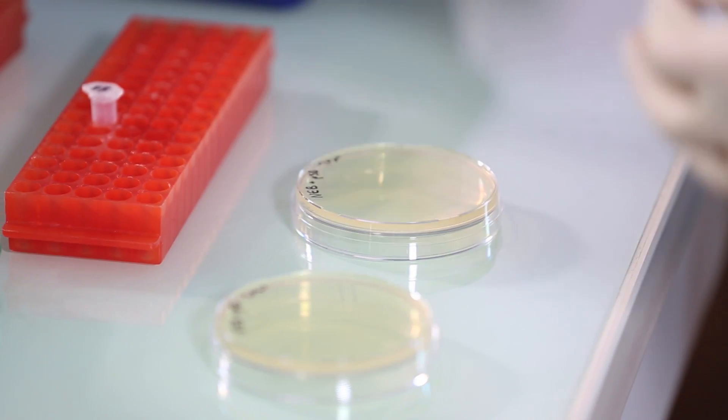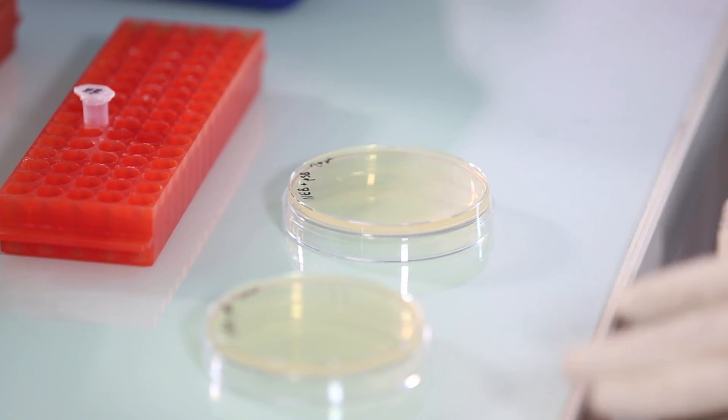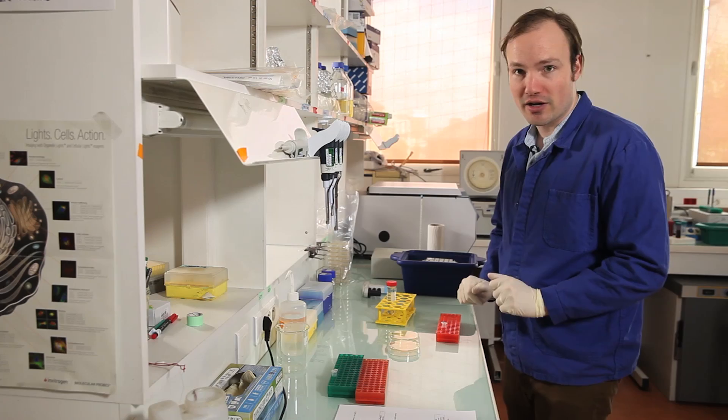So the reason that I like to prepare two plates is I don't know exactly what the transformation efficiency of this plasmid is going to be. And this improves the odds that I'm going to get exactly one plate with the right number of colonies.